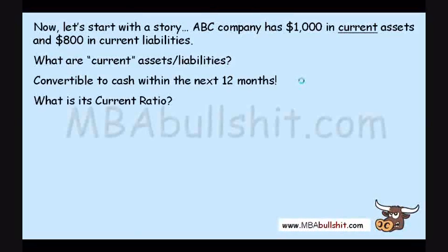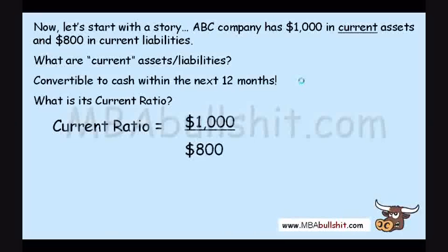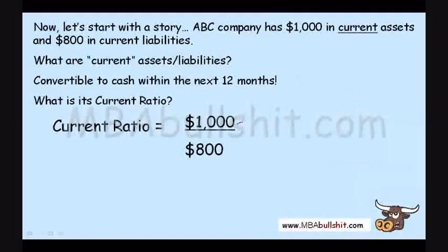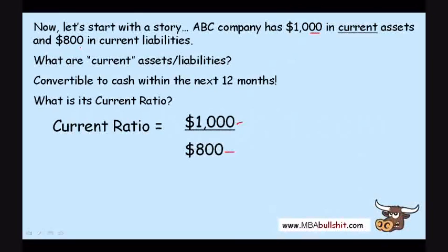What is the current ratio? It's very simple. The current ratio is $1,000 divided by $800 — where $1,000 is the current assets and $800 is the current liabilities — giving a current ratio of 1.25.